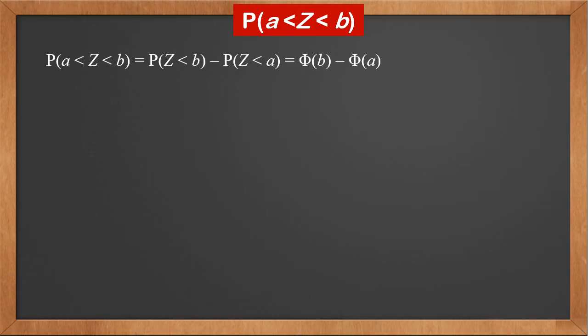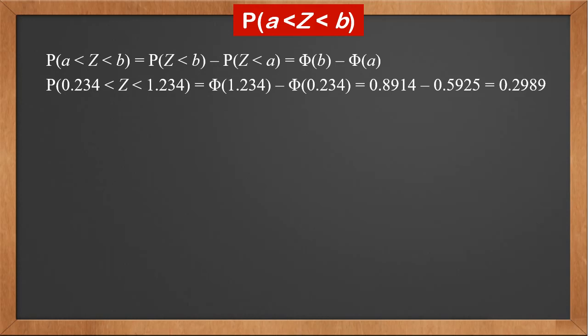Now let's see how to calculate the probability between a and b. We know P(a < Z < b) = P(Z < b) - P(Z < a) = phi(b) - phi(a). So P(0.234 < Z < 1.234) = phi(1.234) - phi(0.234). By looking up the table, we get 0.8914 - 0.5925 = 0.2989.